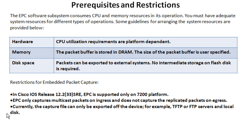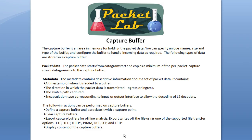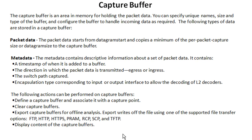The capture file can only be exported off the device via protocols like TFTP. Basically, with EPC, you're going to set up a buffer, then set up a capture point, and associate those two together. The capture point is like an interface — you say, I want everything coming in on FastEthernet 0/0 in both directions, and I want to store that in this capture buffer. The capture buffer is just a space of memory where your packets will be stored.